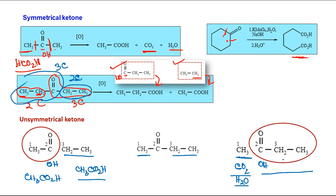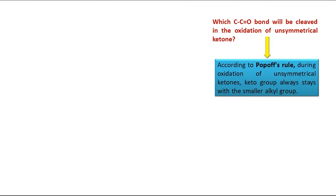The question is: will we get a mixture, or will only one of these possibilities give us the products? Suppose this is possibility one and this is possibility two — which of these two should we actually consider? To answer this question, there is a particular rule, known as Popoff's rule. According to Popoff's rule, we can answer the question of today's video: which C-C bond will be cleaved in the oxidation of unsymmetrical ketones?